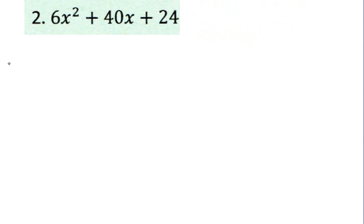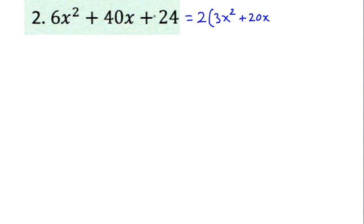For problem 2, we have 6x squared plus 40x plus 24. The first thing, as we did in problem 1, is to look for a greatest common factor. We can see that 6, 40, and 24 are each divisible by 2, meaning we can factor a 2 out of this quadratic trinomial. So 2 times 3x squared, plus 2 times 20x, plus 2 times 12.